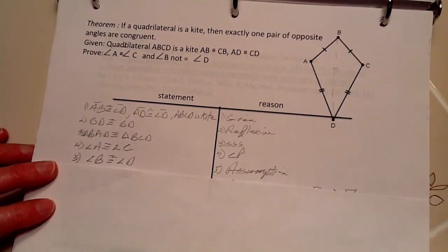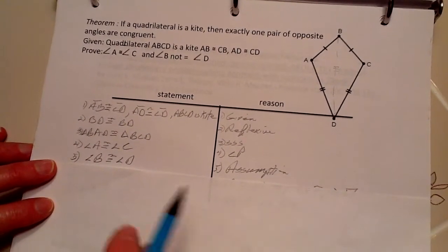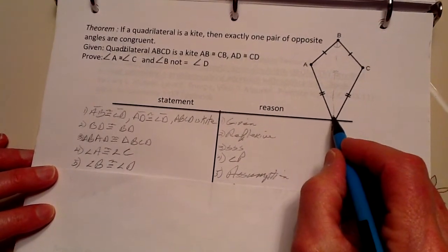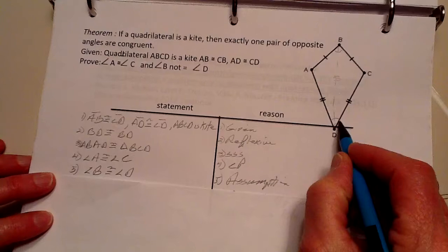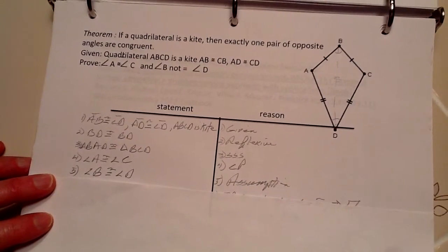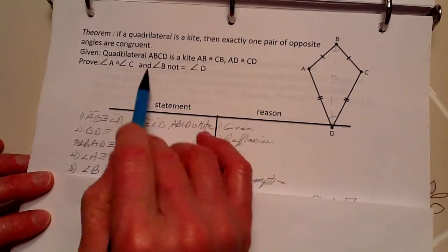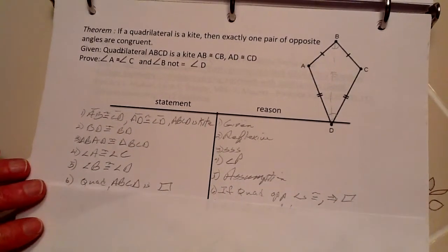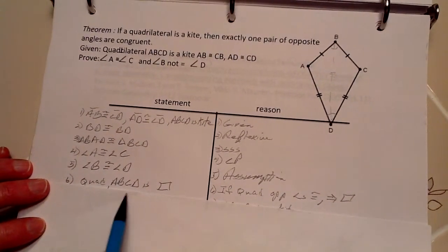Next, we're going to make an assumption. We're going to do an indirect proof now to say that angles B and D are congruent, because we're going to end up proving that they are not, but the way to do that is to assume that they are. So, if we assume that they are, therefore, then,